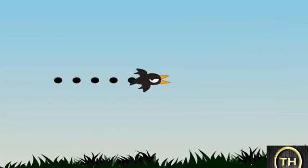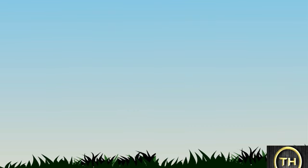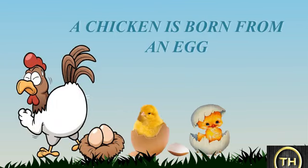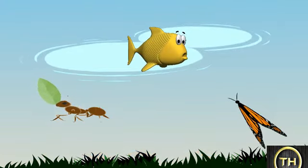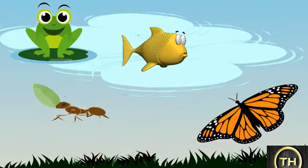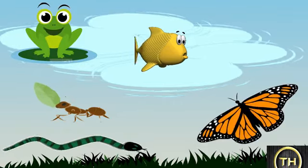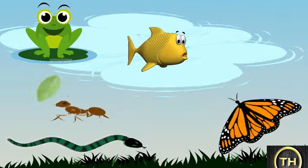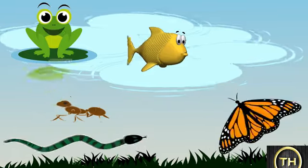All living things are not born in this way. Some animals lay eggs. The chicken is born from an egg. Ants, butterflies, fish, frogs, and snakes also lay eggs. As the eggs of these animals are very tiny, we don't often see their eggs.